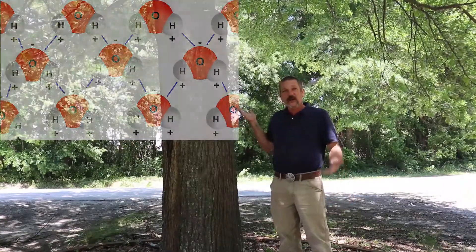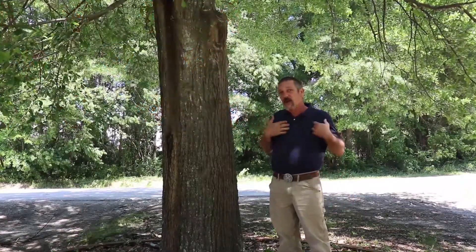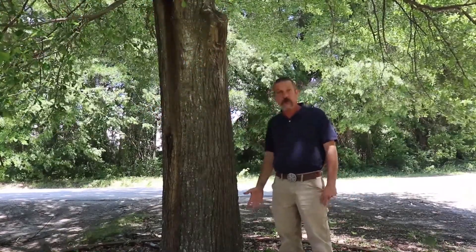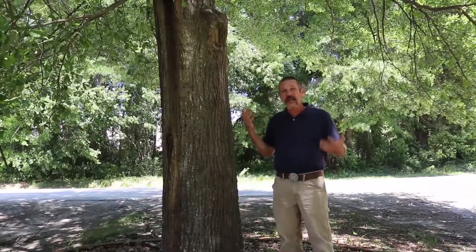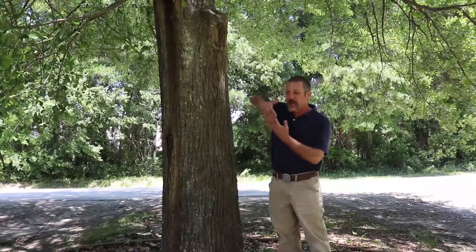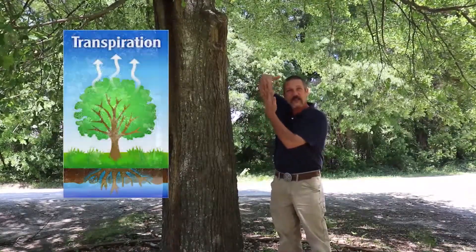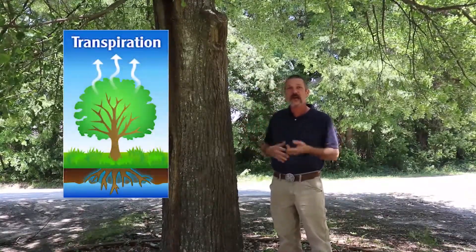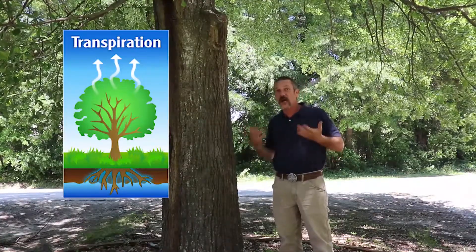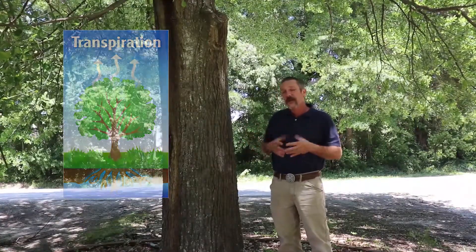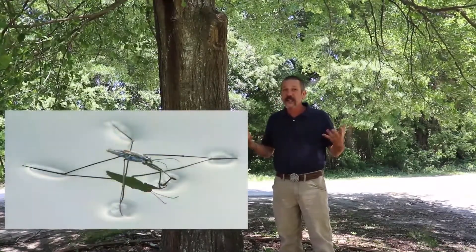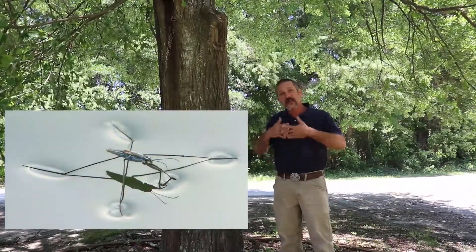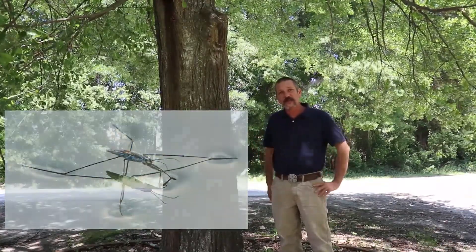Kind of like this tree here. Trees don't have hearts that beat and pump the water from the ground to their leaves. It works off evaporation and sucks itself up the tree because of that cohesion and adhesion. It's the same reason why some bugs can walk across water — it creates that surface tension because of those molecular bonds.